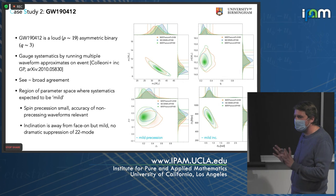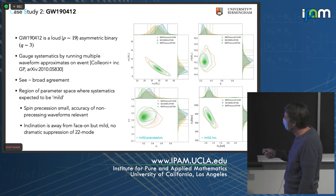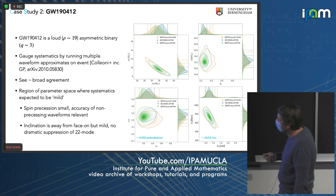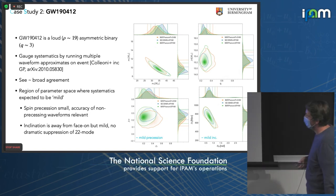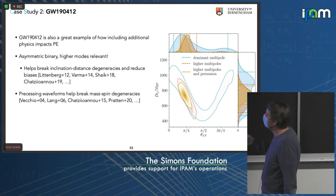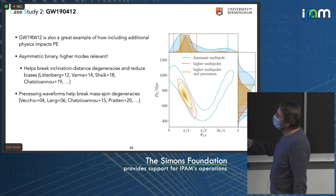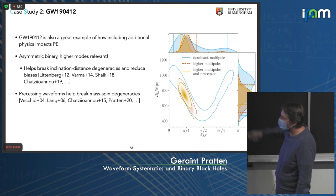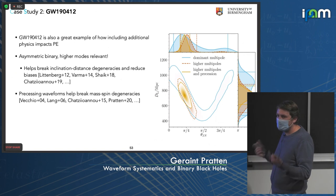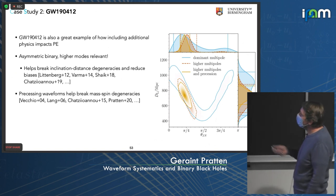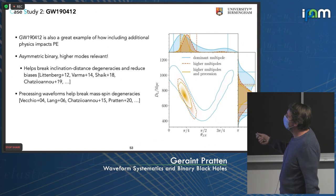GW190412 was also an interesting event — relatively loud at SNR 19, asymmetric binary with mass ratio around 3. Running different multipole waveforms shows broad agreement. Systematics are thought to be mild there since spin precession is quite small (chi-P around 0.2) and inclination is away from face-on but relatively mild, peaking around 0.5. Including higher multipoles helps break the inclination-distance degeneracy, which is great for cosmology and measuring the Hubble parameter. Including precession also helps break mass-spin degeneracies, giving tighter posteriors. So missing physics broadens posteriors and induces biases, while including this physics enables tighter measurements.